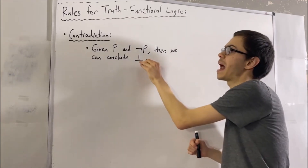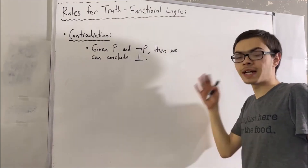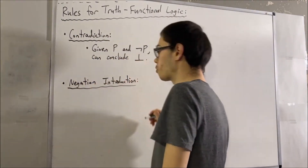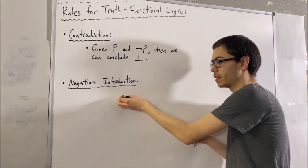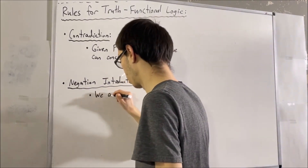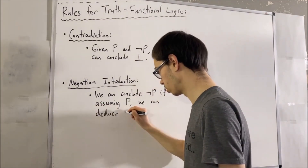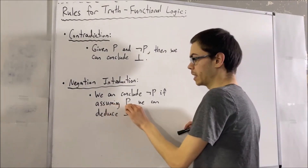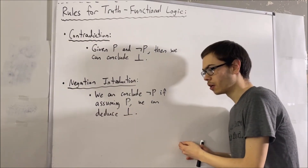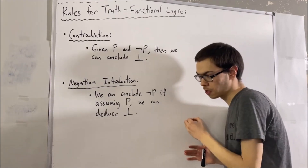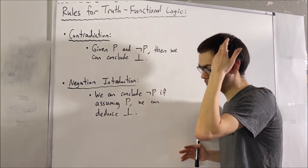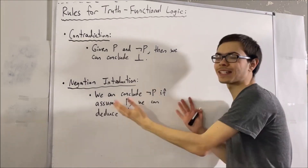Our next two rules tell us what we can do with a contradiction. The first one being negation introduction. We can conclude not P if, assuming P, we can deduce a contradiction. Because if we're assuming P is true and we happen to obtain R and not R, the idea is that R and not R is absurd. So our assumption that P is true must have been wrong — therefore we must conclude not P is true, since either P or not P must be true.